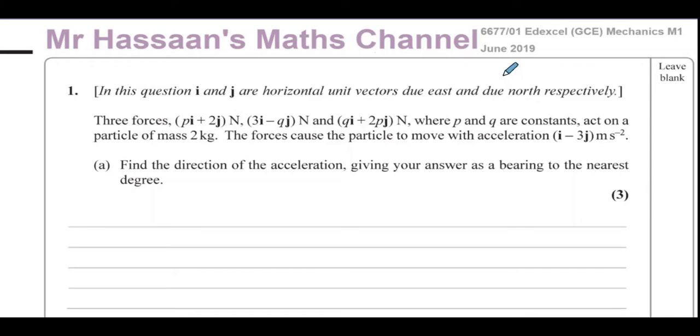Question number one: In this question, i and j are horizontal unit vectors due east and due north respectively. Three forces (pi + 2j) N, (3i - qj) N and (qi + 2pj) N, where p and q are constants, act on a particle of mass 2 kg. The forces cause the particle to move with acceleration (i - 3j) m/s².